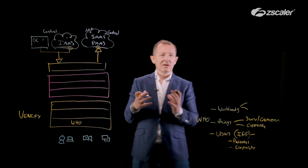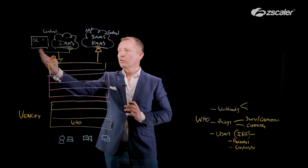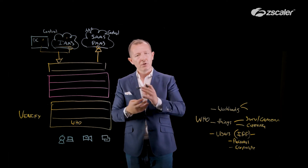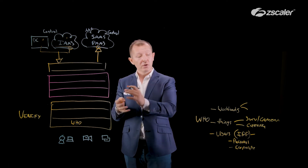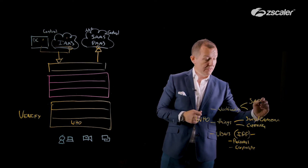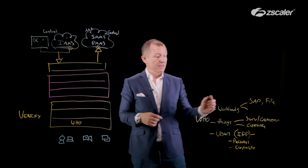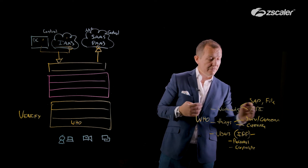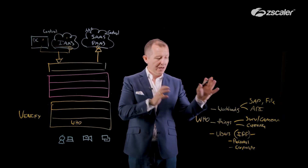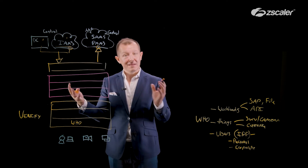Then we move into workloads. Workloads can be anything in a cloud environment talking to another workload, data center to data center, or APIs on the internet talking to APIs. How do we differentiate those and create the right identity to provide the right controls? We need to think about the type of solution — is it SAP, a file share, a SaaS service, an API? The goal is, from a business logic point of view, to differentiate those so we understand the who part and can start putting more context around them, which becomes the next part of verification.